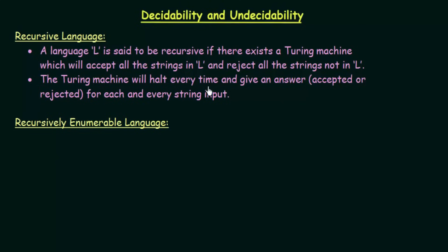The Turing machine will halt every time and give an answer — either accepted or rejected — for each and every string input. So recursive languages are those for which, if we pass a string into the Turing machine, it will accept the string if it belongs to the language and reject it if it does not. The Turing machine for recursive languages will always halt; it will not go into a loop.